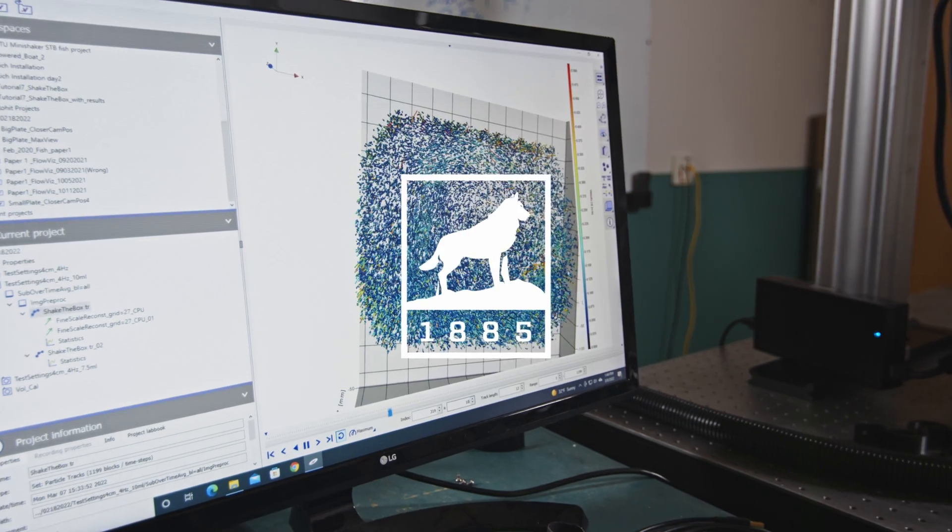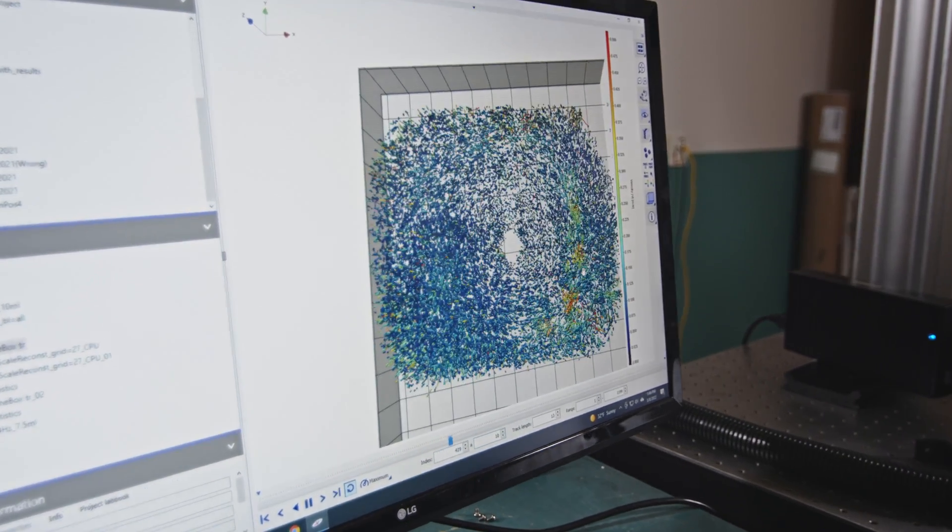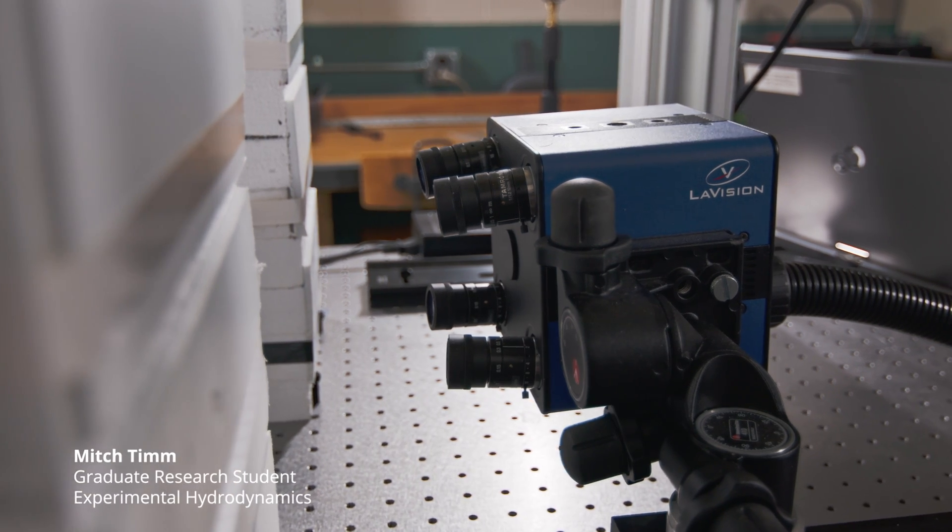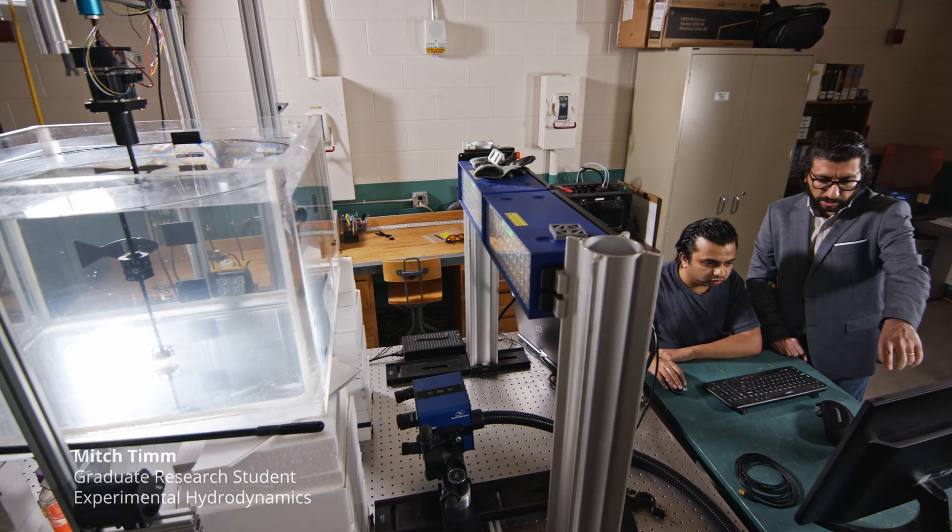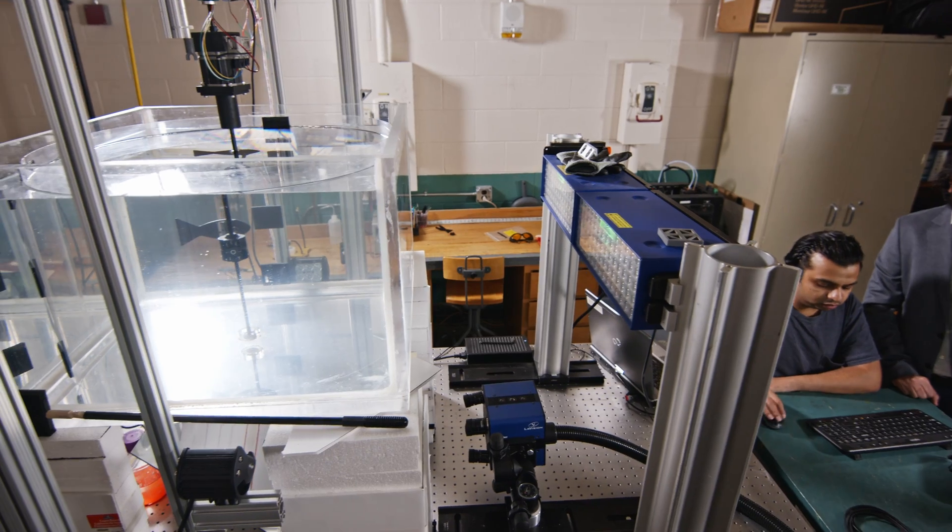Swirling vortices contain clues that can further our understanding of the hydrodynamic function of fish schools. What can a model robotic swimmer teach us about collective fish movement and fluid dynamics?